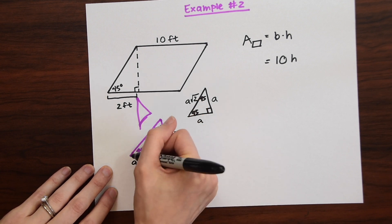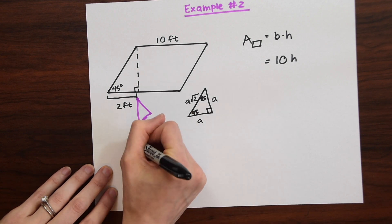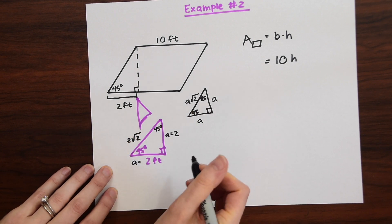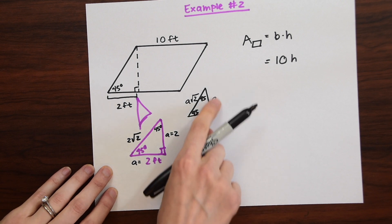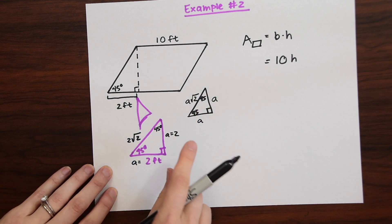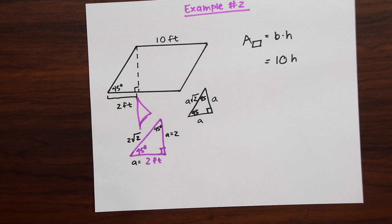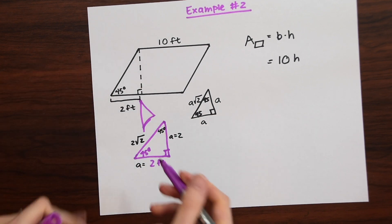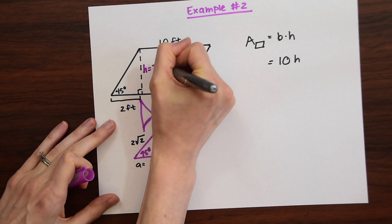And then this side which we don't even need to find but we can is a√2, 2√2. So this is just using that reference special triangle that we know. Knowing that we can now go back into the parallelogram. If we place this back in here we would know that the height is now equal to 2.